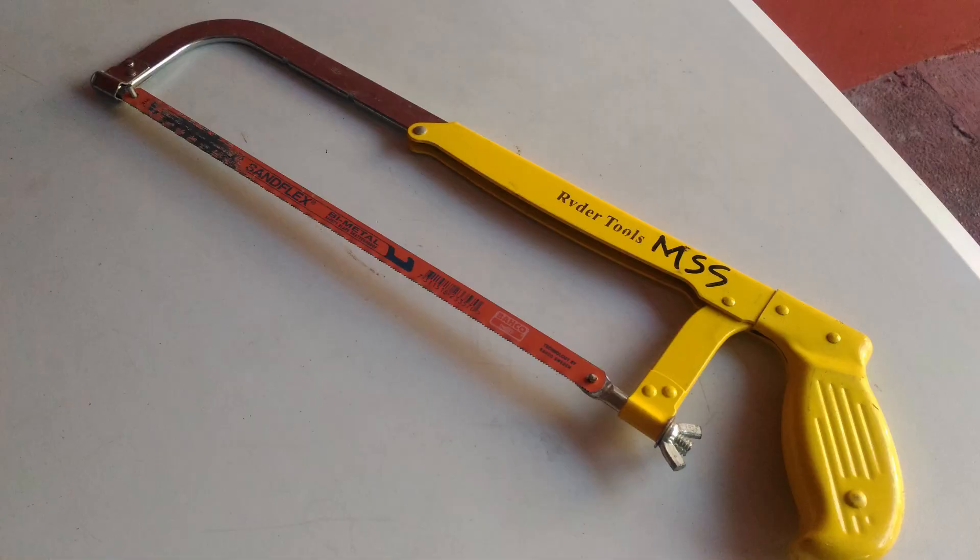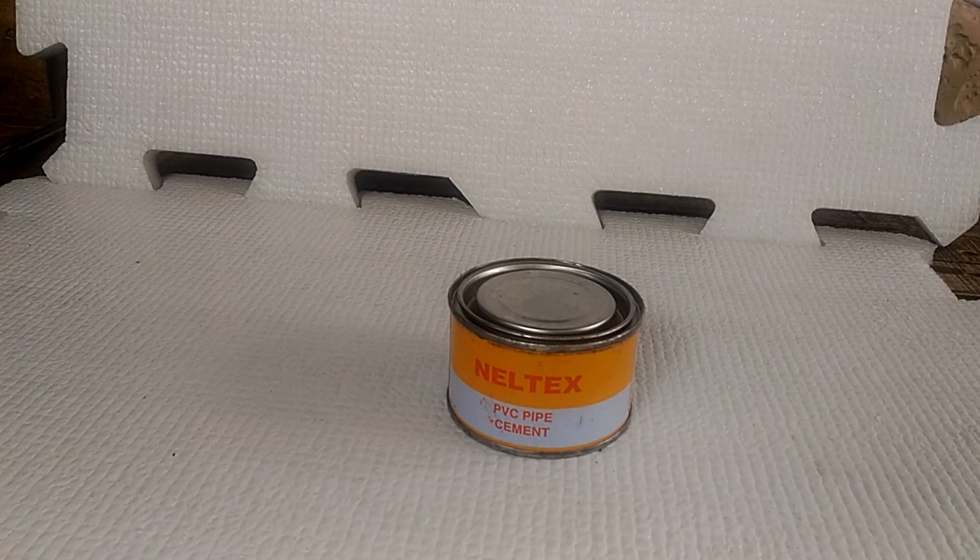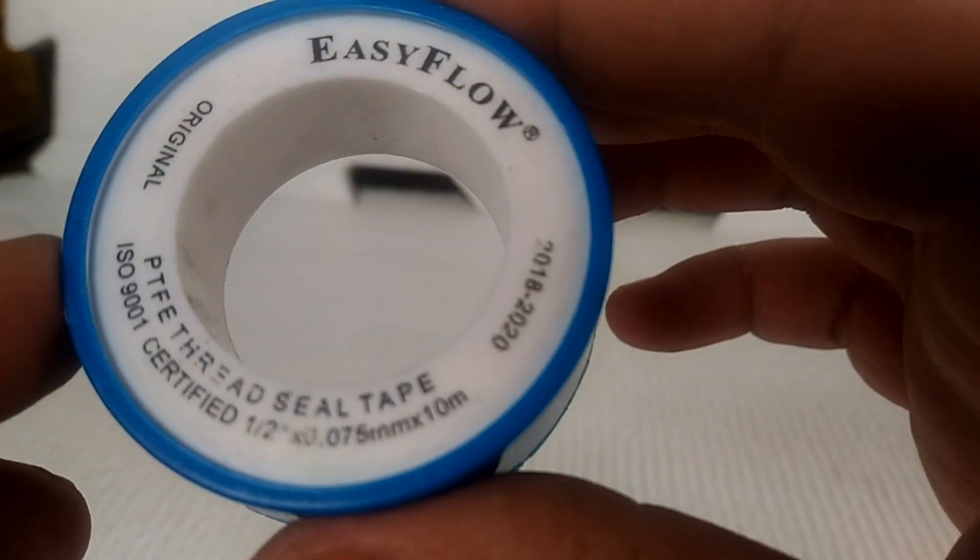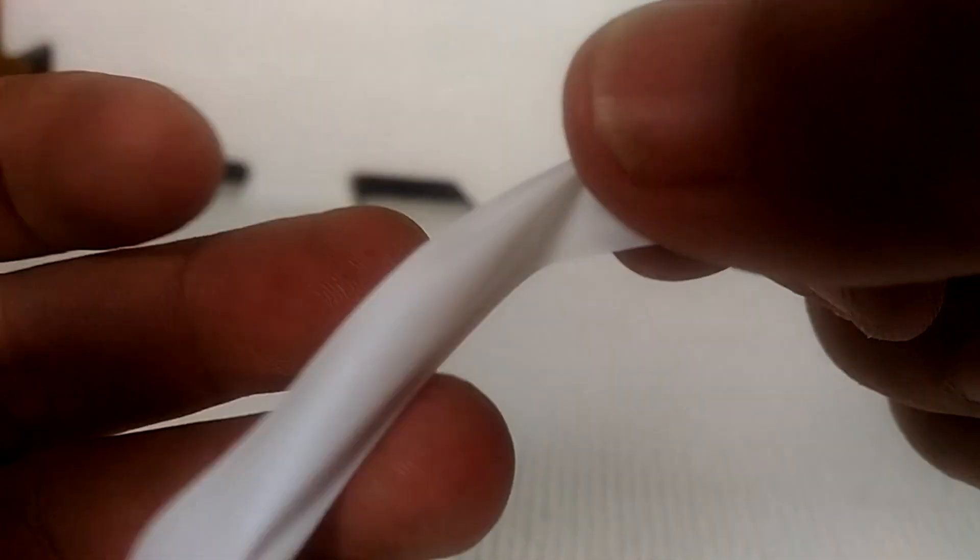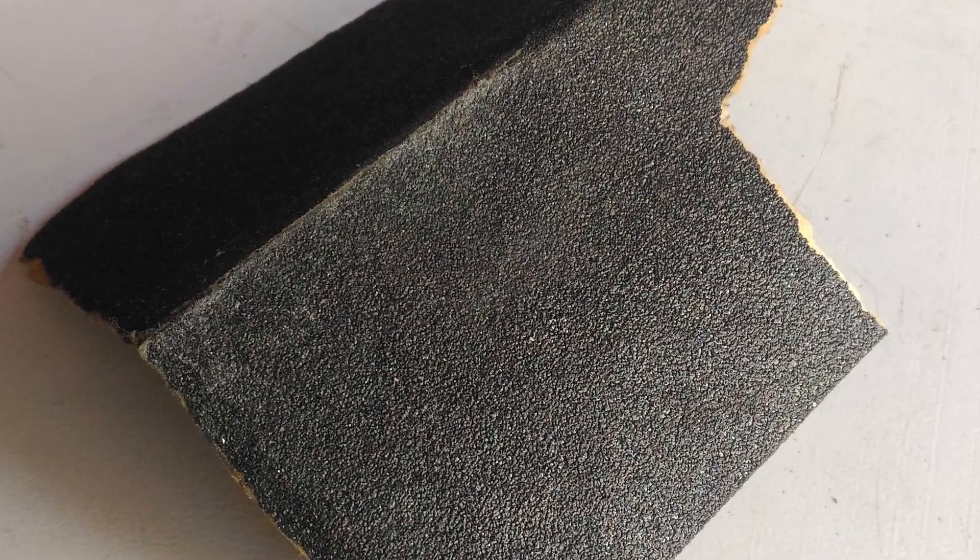We'll also need the hacksaw to cut the PVC pipes, PVC cement to connect our new pieces together, and thread seal tape or teflon tape to waterproof our float valve connection. Oh and some sandpaper too, about 120 grit which is quite rough.